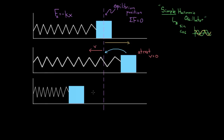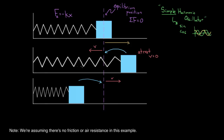Now the spring is pushing the mass to the right, slowing it down until it stops. But the spring is still compressed, so it keeps pushing right, now speeding the mass back toward equilibrium — but again, it gets the mass back to equilibrium with a huge speed to the right, and the mass overshoots again. This is why oscillation happens: it's a constant fight between the inertia of the mass wanting to keep moving and the restoring force desperately trying to get the mass back to equilibrium. They keep overshooting each other, and the oscillation continues over and over.